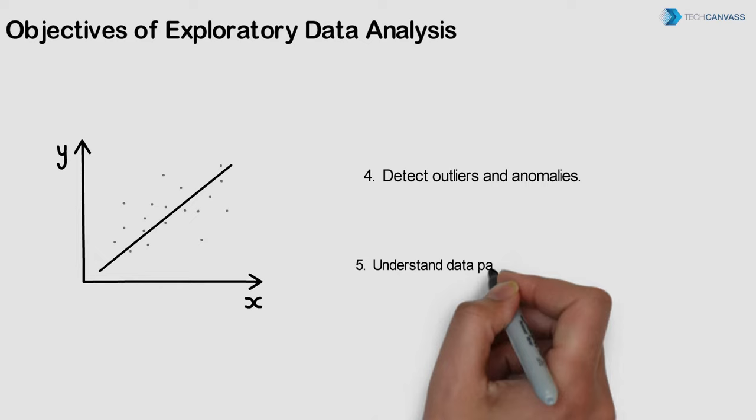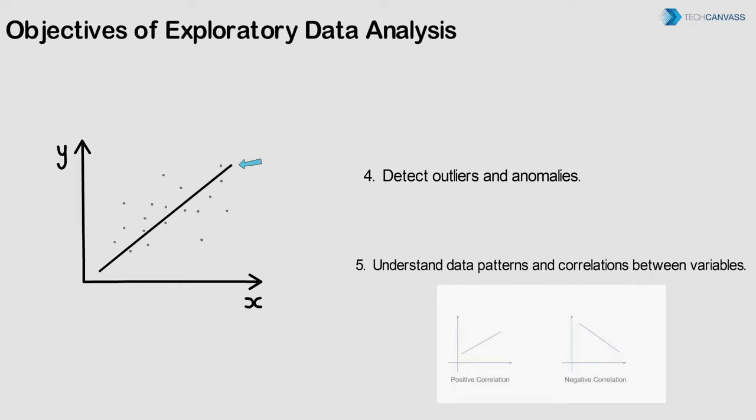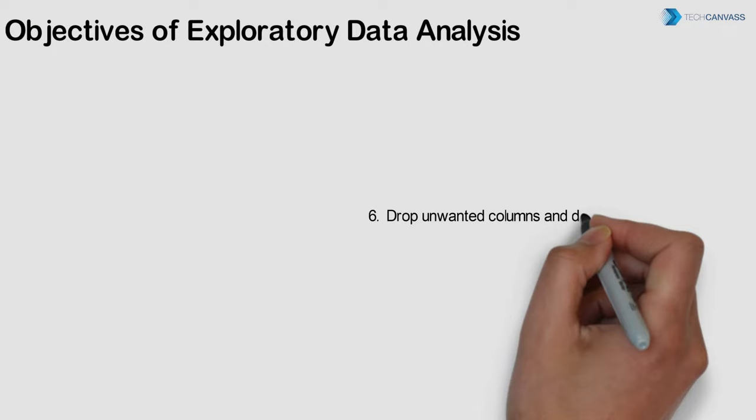Using EDA we may uncover the behavior of variables when combined together. Their correlation tells us how much and in which direction we should expect one variable to change when another changes. It is a value between negative one and positive one, indicating a strong negative or strong positive relationship. Correlation plays a vital role in locating the crucial variables on which other variables depend.